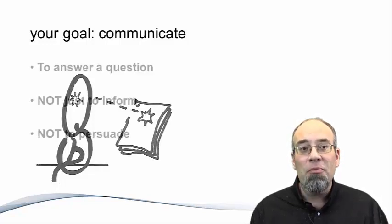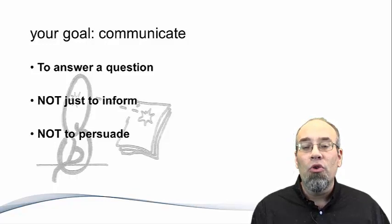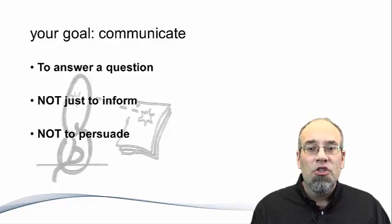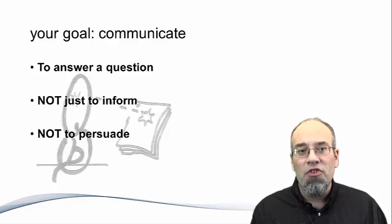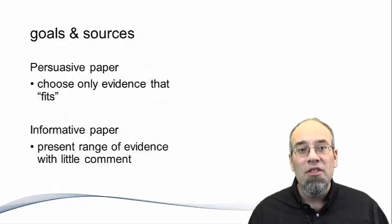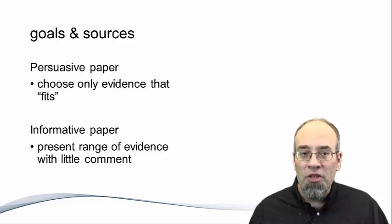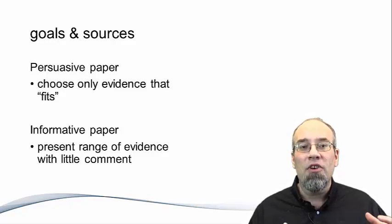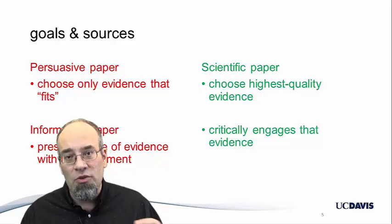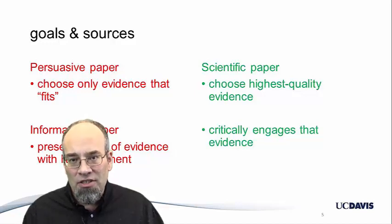A good scientific paper is not the same as a textbook, which exists only to inform, or an advertisement, which exists only to persuade, although a paper will have some elements of both. The biggest difference among these different types of writing is the sources of evidence selected. A simply informative paper looks at a wide variety of evidence but does very little with it. The scientific paper takes the highest quality evidence dealing with the question and critically engages it to make sense of it.